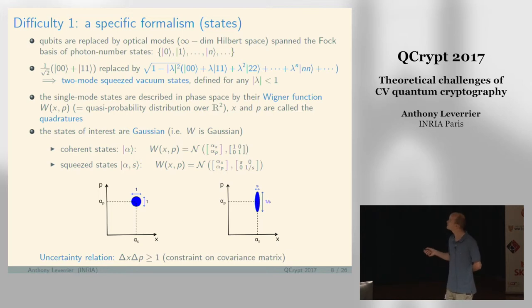If you move to continuous variables, this state is replaced by a two-mode squeezed vacuum state. It's parametrized by a squeezing parameter called λ. The state looks like |00⟩ + √λ|11⟩ + λ|22⟩, etc.